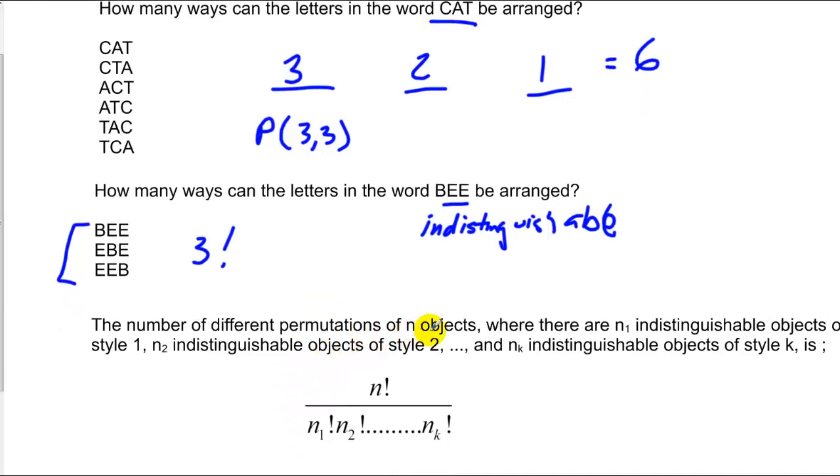So what we've got is a new type of equation where the number of different permutations of n objects, where n₁ are indistinguishable objects, n₂ could be indistinguishable, and so on and so forth. The total number of permutations is n factorial divided by each number of items that's indistinguishable and its factorial.